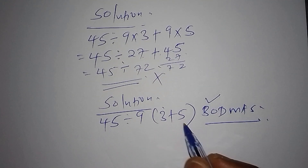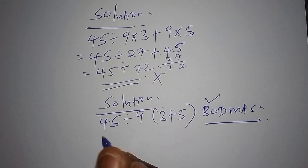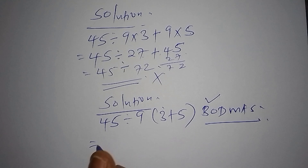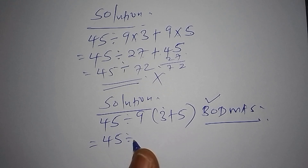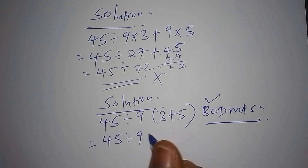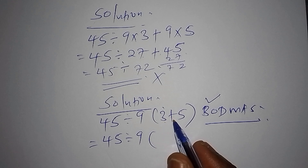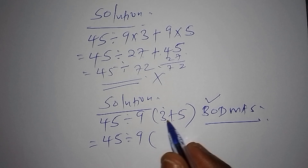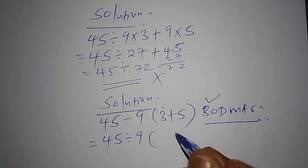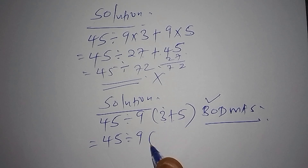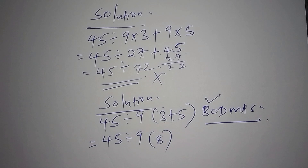You just have to work out the number inside the bracket first. So this equals 45 divided by 9, into bracket 3 plus 5. And 3 plus 5 is 8. So you shall have 8 as the bracket result.